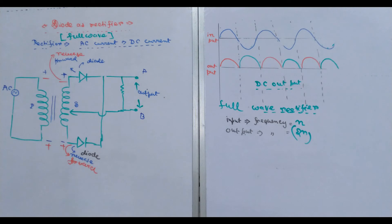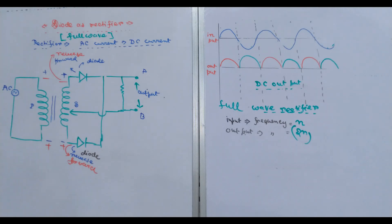The most interesting part is: if we use this input frequency, then the output DC will be at 2× frequency. The frequency will be just twice. We will be able to do full-wave rectifier, and we call a simplified configuration a diode bridge.